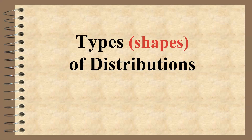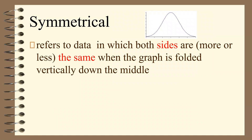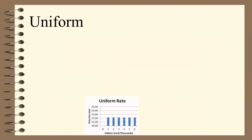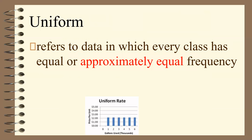Now, types or shapes of distributions. Symmetrical refers to data in which both sides are more or less the same when the graph is folded vertically down the middle — this is called bell-shaped, with a center mound and two sloping tails. We'll eventually discuss a special bell-shaped curve called the normal curve. Uniform is another type, referring to data in which every class has equal or approximately equal frequency — notice the bar graph where all bars are about the same height. No real data is exactly equal, but if it's approximately equal, it would be uniform.